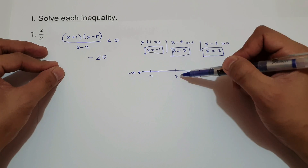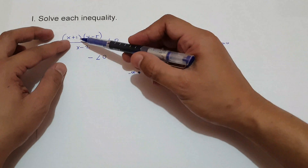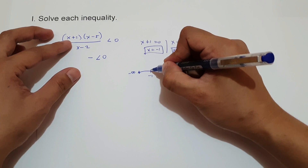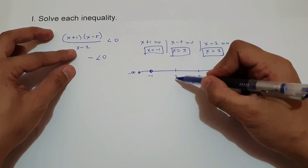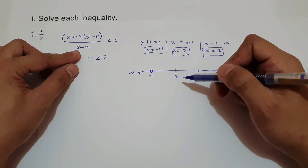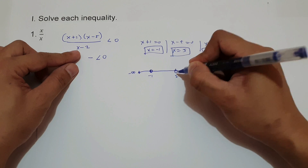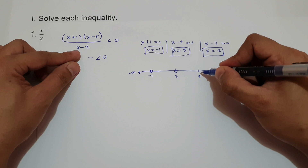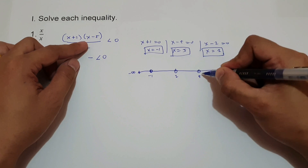Let us check negative 1, 2, and 5 in our equation. For negative 1, substituting gives 0, so 0 less than 0 is false — negative 1 is not part of the solution, so we give it an open circle. For positive 2, substituting gives 0 on the denominator — undefined — so 2 is not part of the solution, open circle. For 5, substituting also gives 0, so 5 is not part of the solution — open circle.